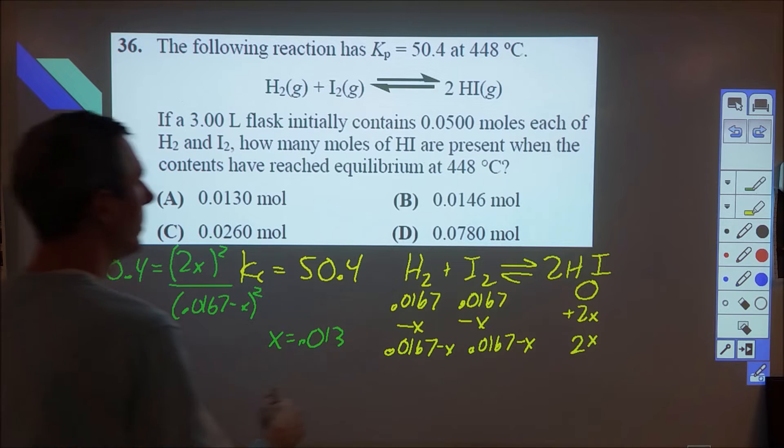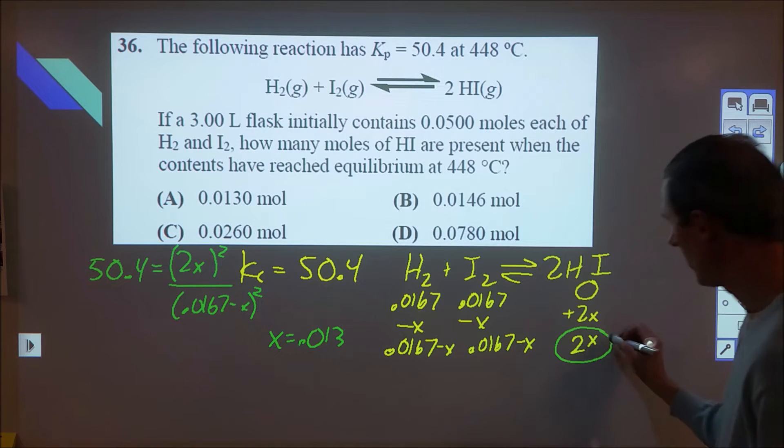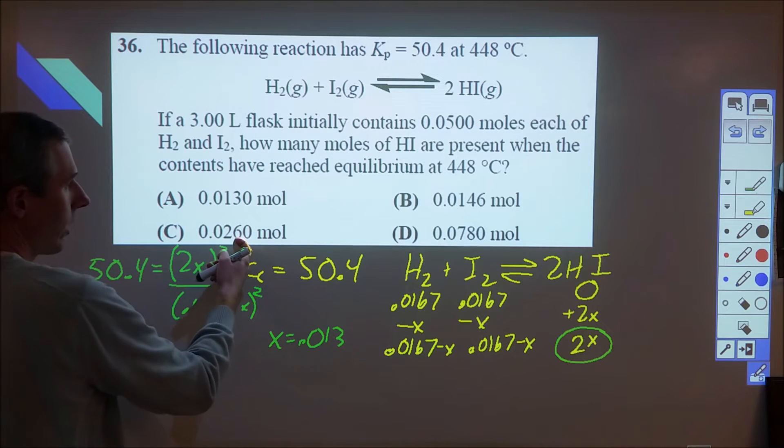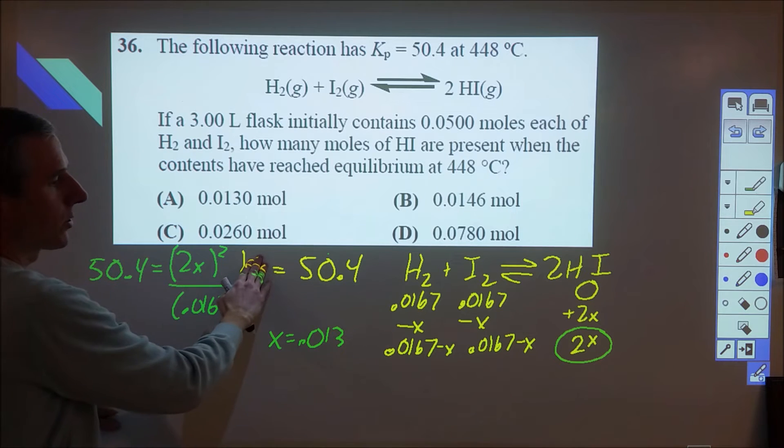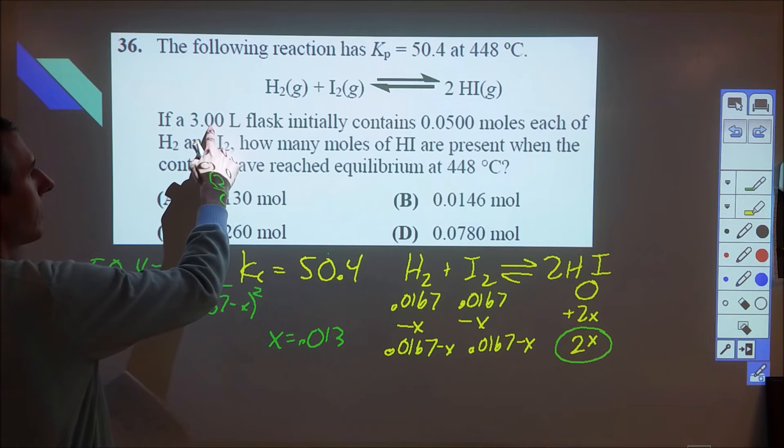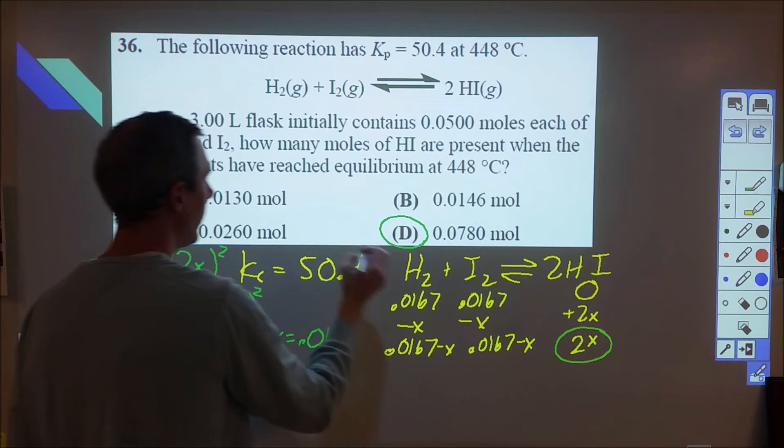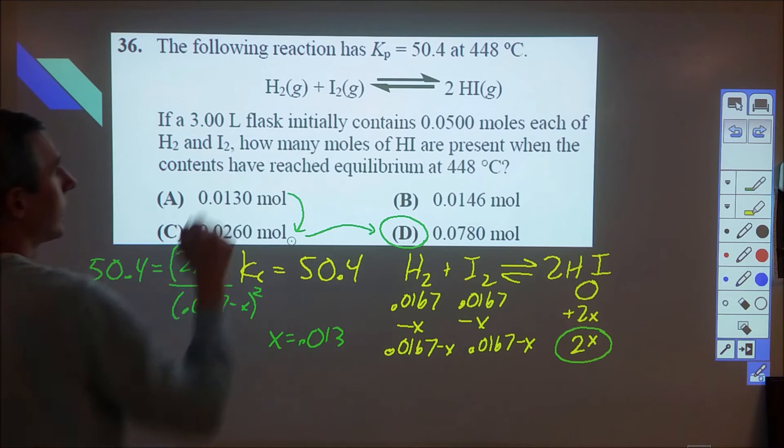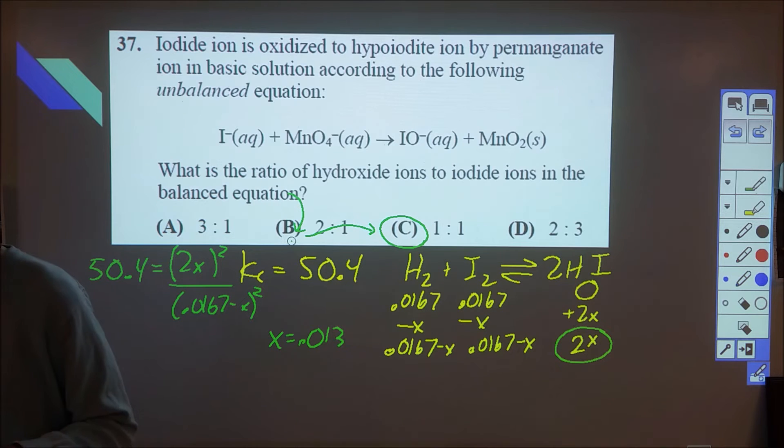But if you look, they're asking for how many moles of HI are present. So I have to look at the fact that that's 2x. So I double 0.013, which is 0.0260, but it also asks for moles and not concentration. So currently, since I have this in molarity, I'm going to have to reapply the 3 liters, and I'm going to have to triple that value, which gives us D. So that was tricky. I caught this one, but I failed to see that I still had it in concentration instead of moles as I quickly worked through a hard test, and I missed that.